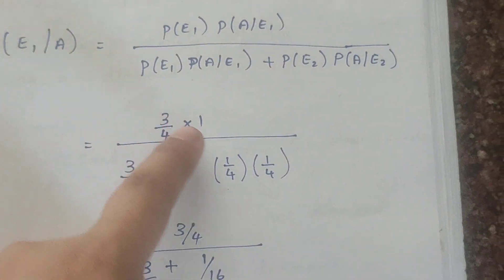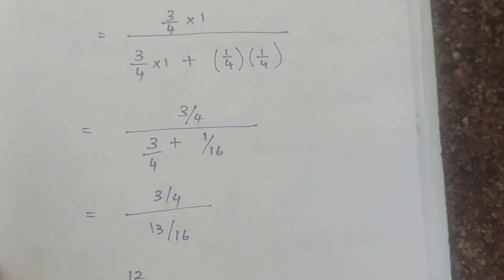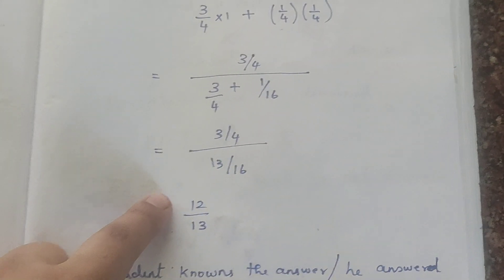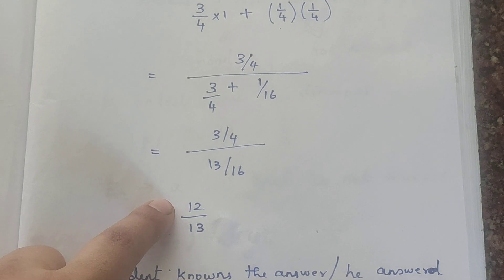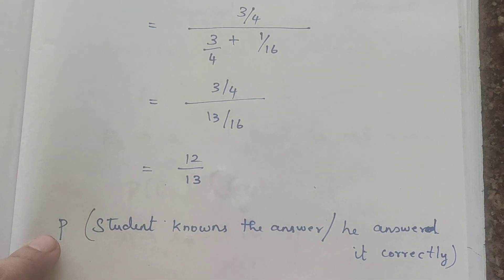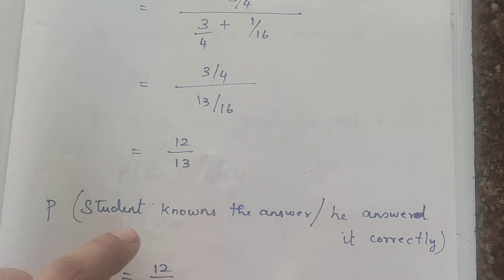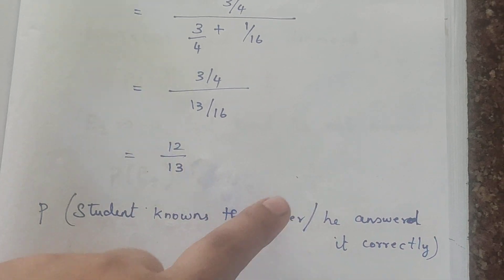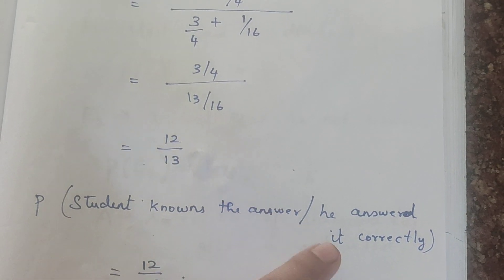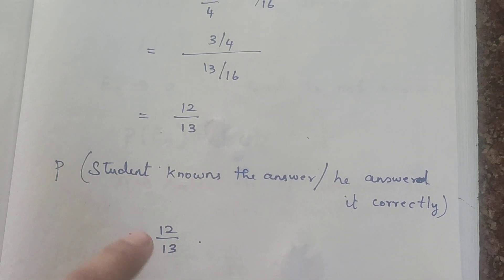We substitute the values and simplify the answer. After simplification, the answer is 12 by 13. So the probability that the student knows the answer given that he answered it correctly is 12 by 13.